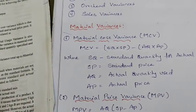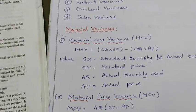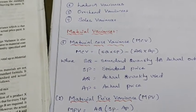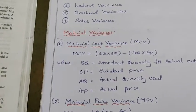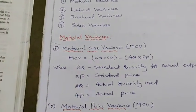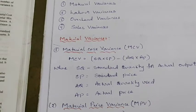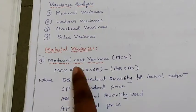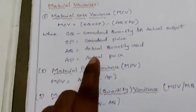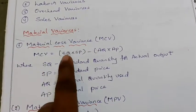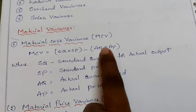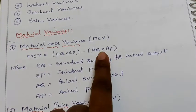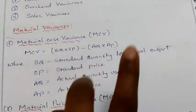What is the material cost variance? Material cost variance is nothing but the difference between the standard cost for the output achieved and the actual cost incurred. It is the difference between the standard and actual cost — how much budget you made versus how much was actually spent. The formula is: MCV = (SQ × SP) − (AQ × AP), where SQ is standard quantity, SP is standard price, AQ is actual quantity, and AP is actual price.